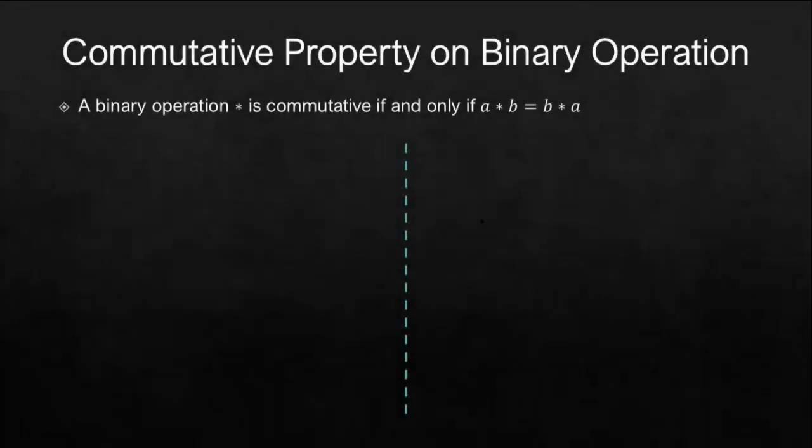Commutative property states that for a binary operation to be considered as commutative, it should satisfy a asterisk b equals b asterisk a. This means that even if you arrange the terms in different order, it will result in the same answer.